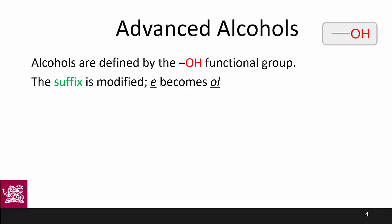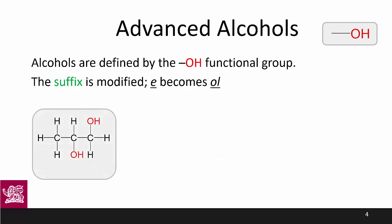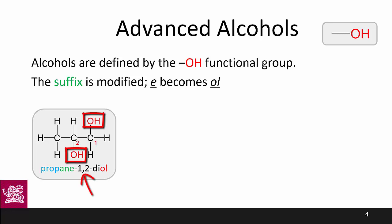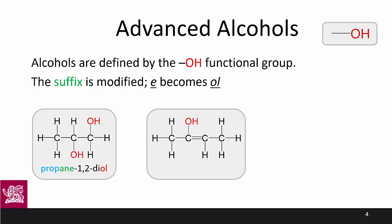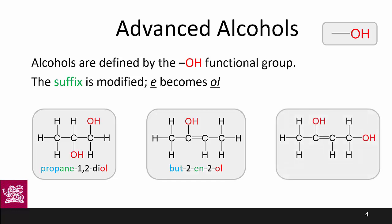Let's have a look at some more advanced alcohols now. The rules are exactly the same but the questions are a little more complicated. This is propane-1,2-diol. The numbering needs to start from the right-hand side to minimize the numbering, and we include both the numbers 1 and 2 with the 'di-' modifier to indicate there are two OH groups and give each of their locations. Next is but-2-ene-2-ol, and finally but-2-ene-1,3-diol — dialcohols retain the '-e' of their suffix.